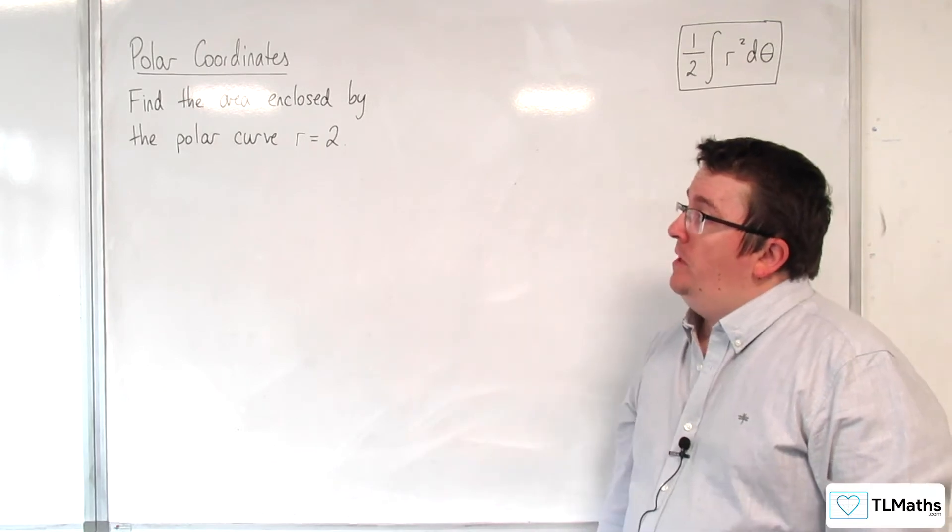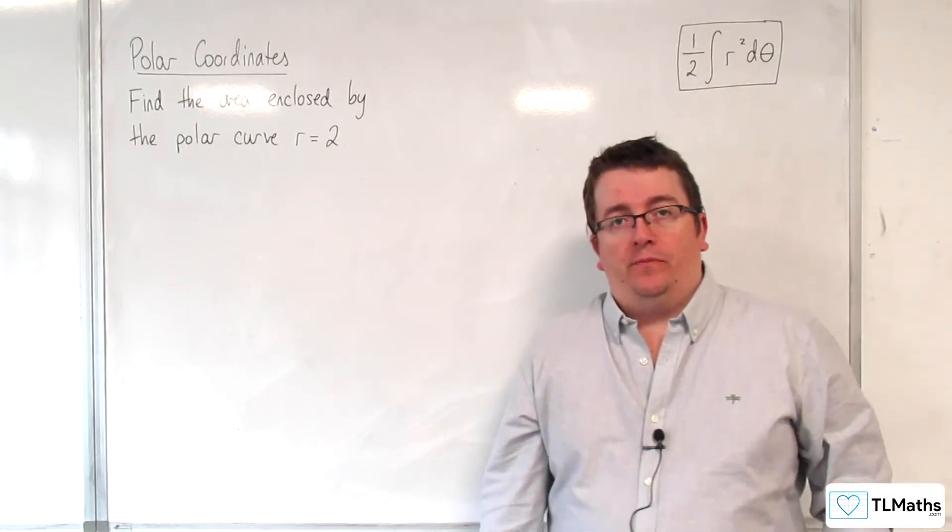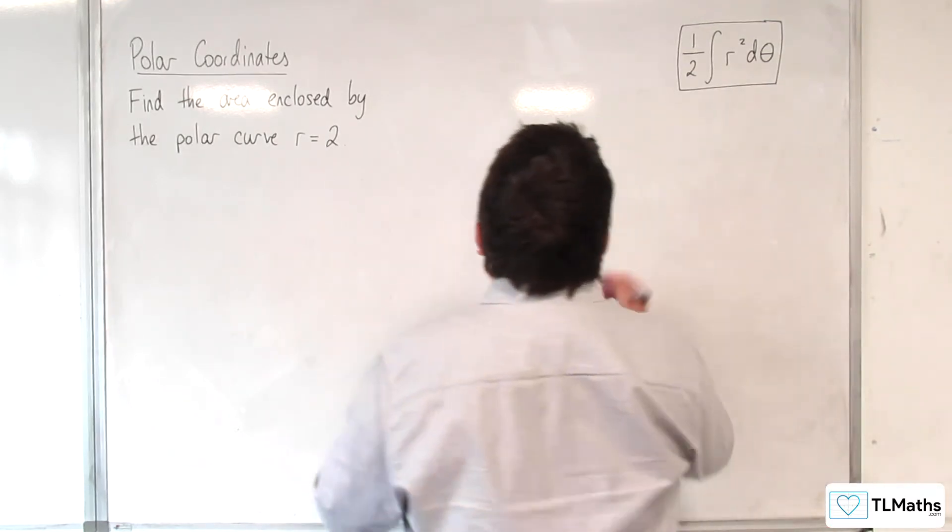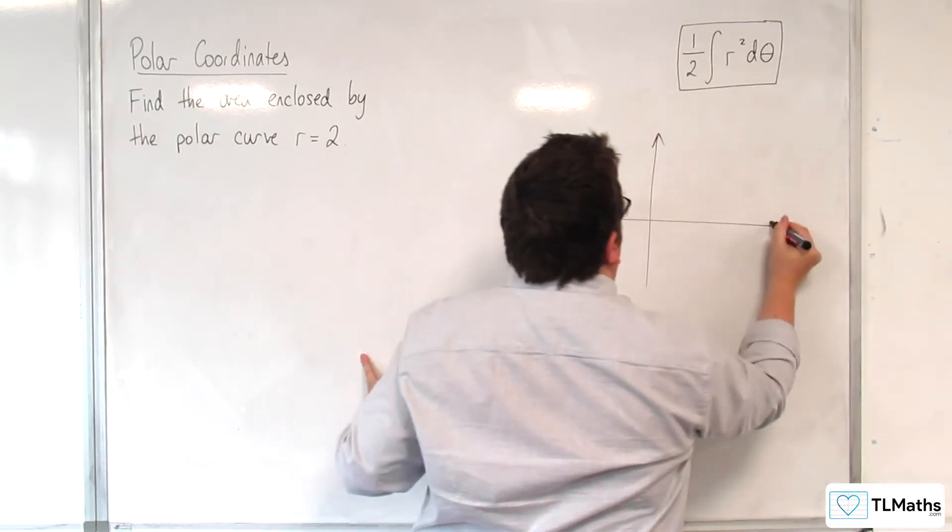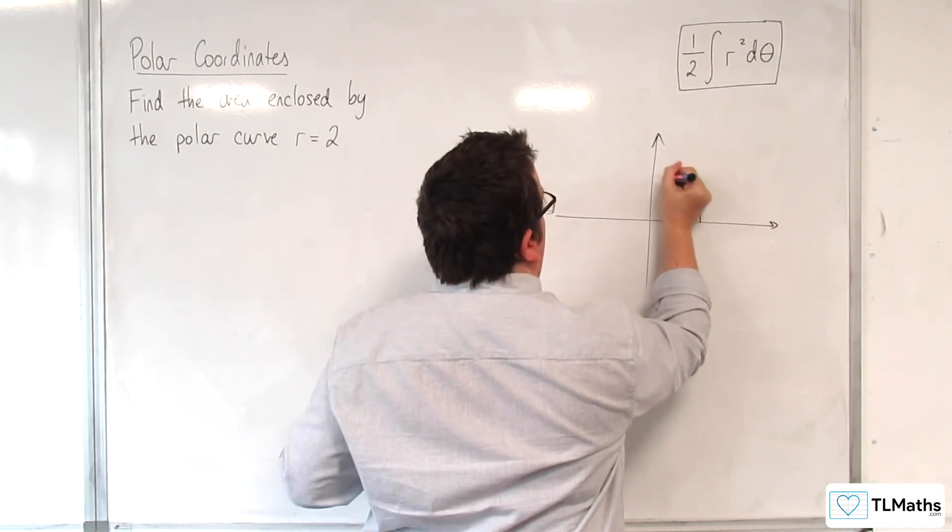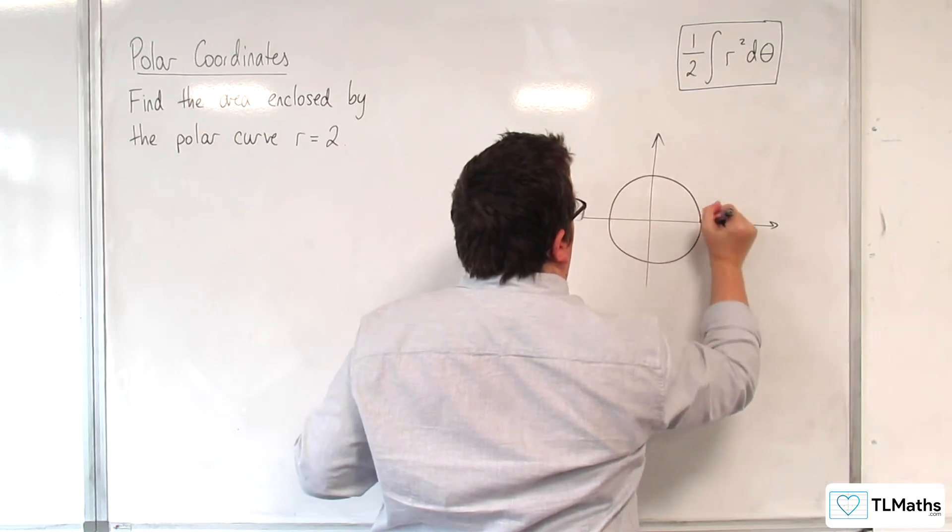So find the area enclosed by the polar curve r equals 2. We know this to be a circle centered at the pole with radius 2.